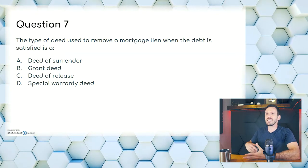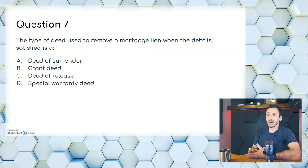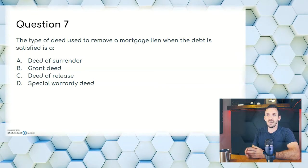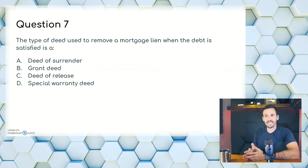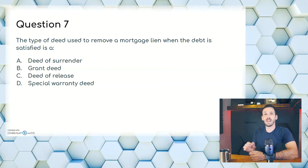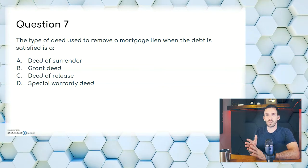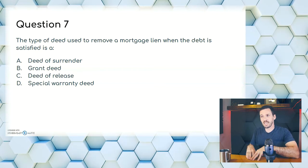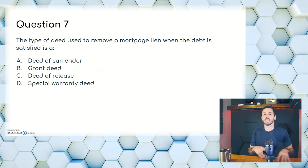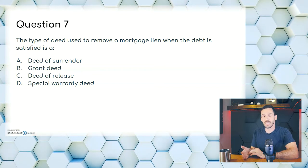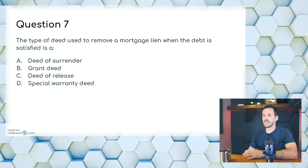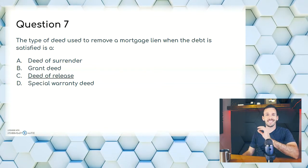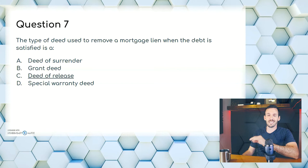Question seven: the type of deed used to remove a mortgage lien when the debt is satisfied is — A, deed of surrender; B, grant deed; C, deed of release; or D, special warranty deed. Deed of surrender transfers ownership over a certain period of time; not grant deed and not special warranty deed. The answer is C, deed of release.